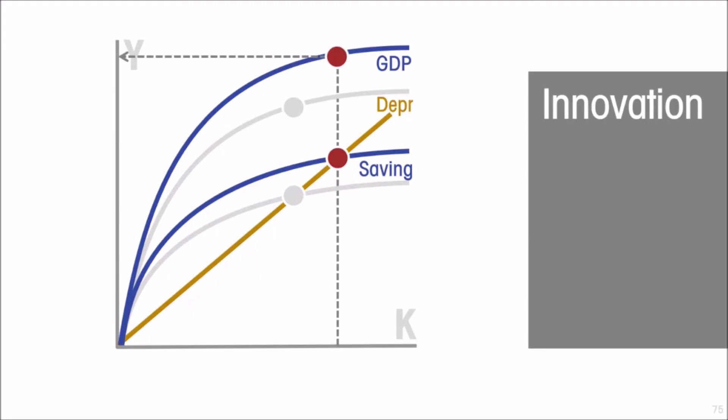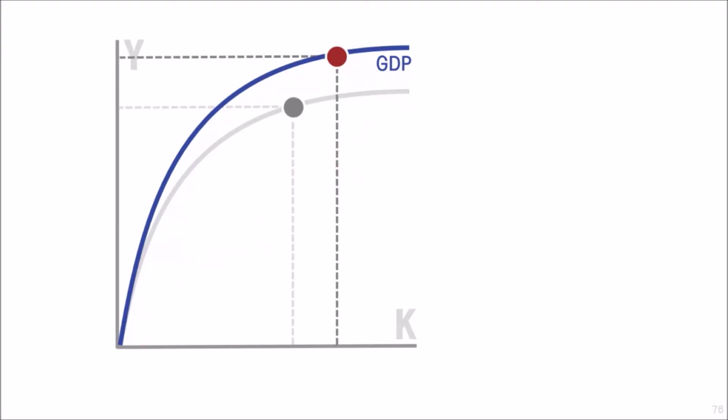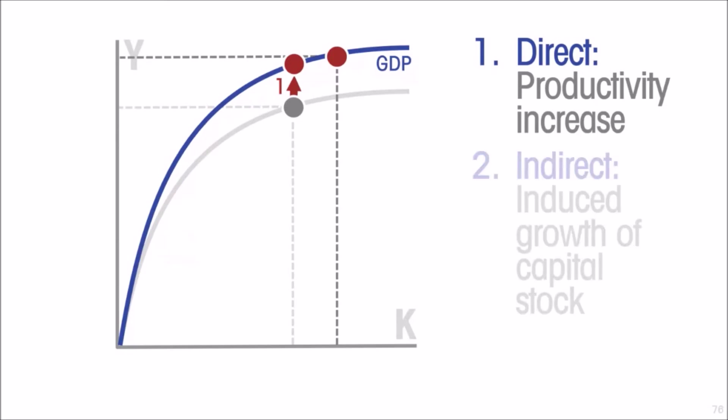We can show that innovation has two distinct effects on the economy. The economy has grown for two distinct reasons as a result of the innovation. There was the direct effect. Output goes up because you are getting more out of the existing amount of inputs, including the capital stock. And there is the indirect effect, which is the induced growth of the capital stock that comes from being able to save and invest more.